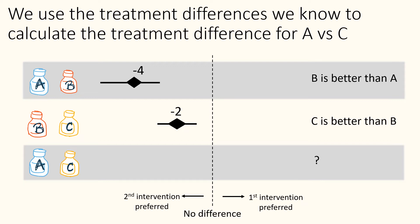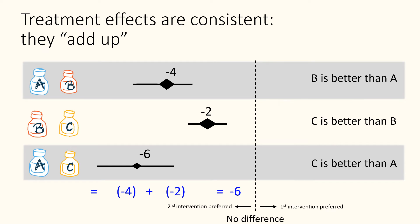As an example, if the outcome is depression, we see that depression scores are reduced by 4 points on average with B compared with A, so B is a more effective treatment than A. When we add the treatment effects together, we estimate that depression scores are reduced by 6 points on average with treatment C compared with the reference treatment A, and conclude that C is better than A. We can use the same process in a network of treatments. When we assume consistency, we can calculate the difference between A and C by summing all of the treatment differences on the path between them.